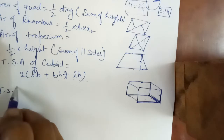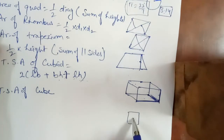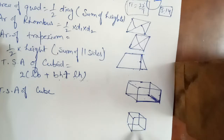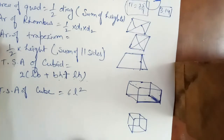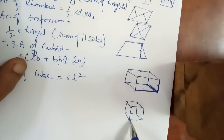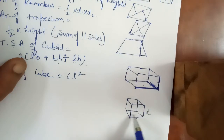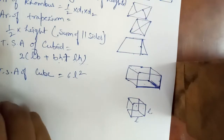Total surface area of cube — cube is in the form of a dice. Dice जो होते हैं वो cube की form में होते हैं, जैसे सभी sides squares की होती हैं. इसमें formula क्या है? 6 into side square. एक square का area side square होता है, और cube में 6 squares होते हैं, इसलिए 6 into side square.